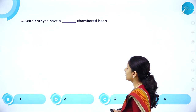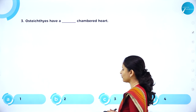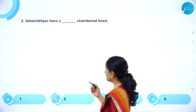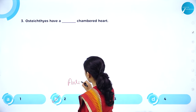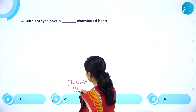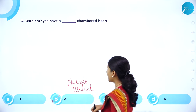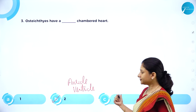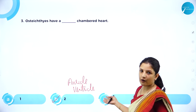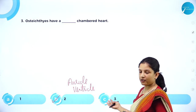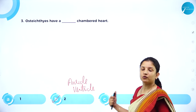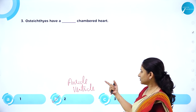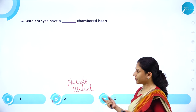MCQ: Osteichthyes have a dash-chambered heart — one, two, three, or four? Option B is the right answer: they have one auricle and one ventricle, therefore a two-chambered heart. A three-chambered heart is found in reptiles and amphibians. A four-chambered heart is found in aves and mammals. So in Osteichthyes, the right answer is a two-chambered heart.